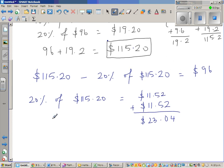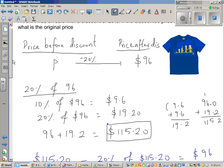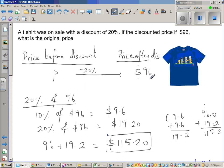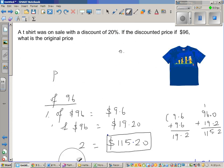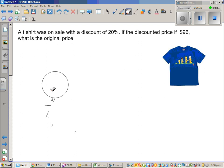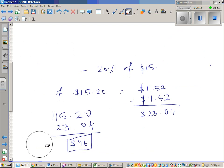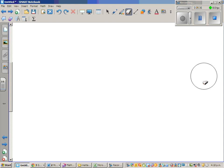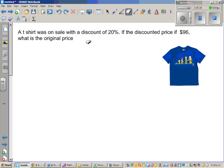So 115 takeaway 23.04 is of course not $96. You don't even need to do the subtraction. You can say this takeaway this is not 96. So we have done something wrong here. So this process of taking 20% of 96 is not the right way. So let us do the right way. I taught you the wrong way so that you understand because many times we learn from our mistakes. The best way to learn is do something wrong and see whether your answer is making sense and then do the right way.